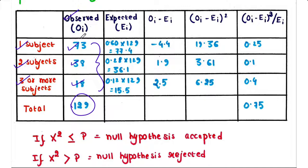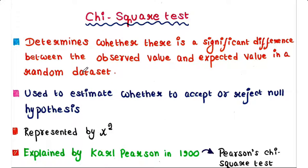Now let's define chi-square test. A chi-square test basically determines whether there is a significant difference between the observed value and expected value in a random dataset. In other words, the chi-square test is used to estimate whether to accept or reject null hypothesis.